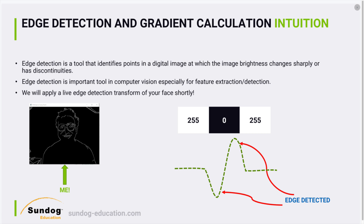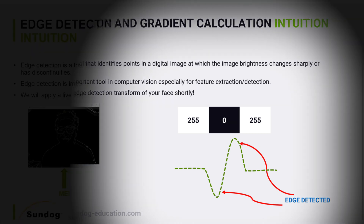Let's start from the basics, since this can be a little confusing. We're also going to apply all these techniques using your webcam as a project, which is pretty fun. Now let's assume I have three pixels: the first pixel is white which is 255, then as we go in the x direction we go to zero, and then as we move forward we go back to 255 — going from bright to dark to bright again.